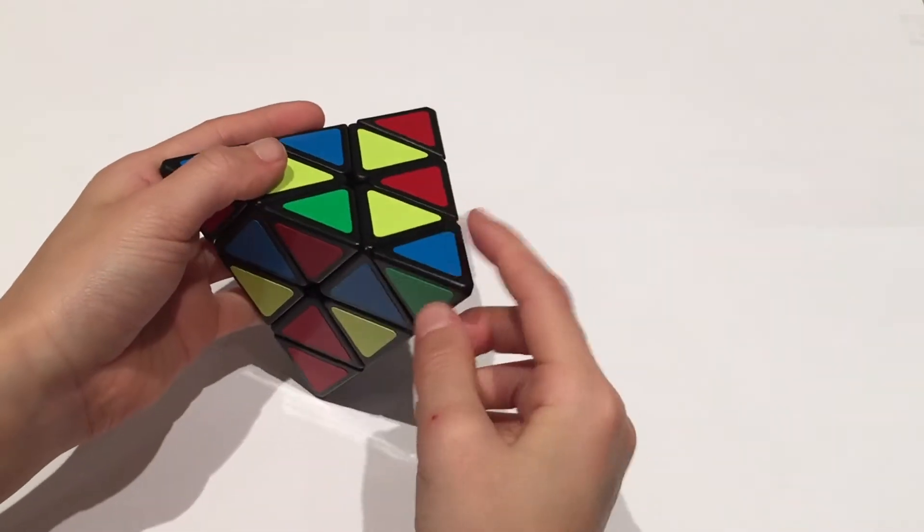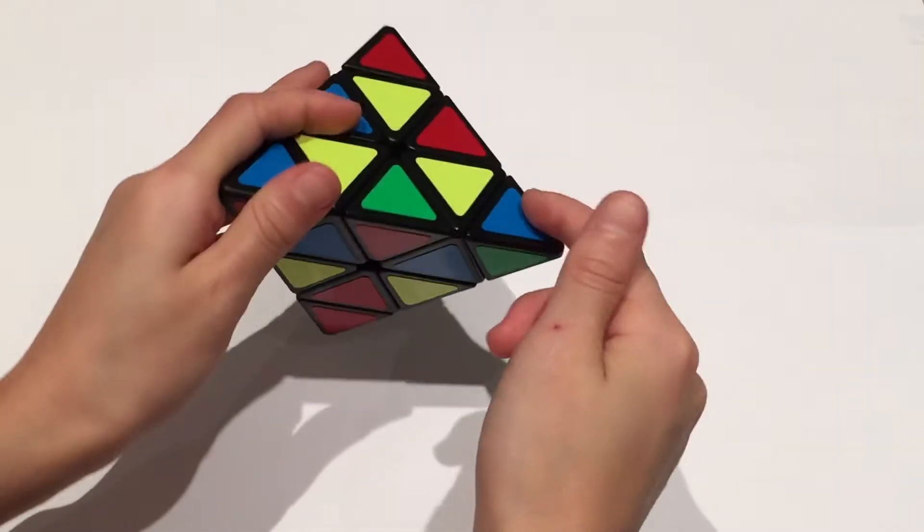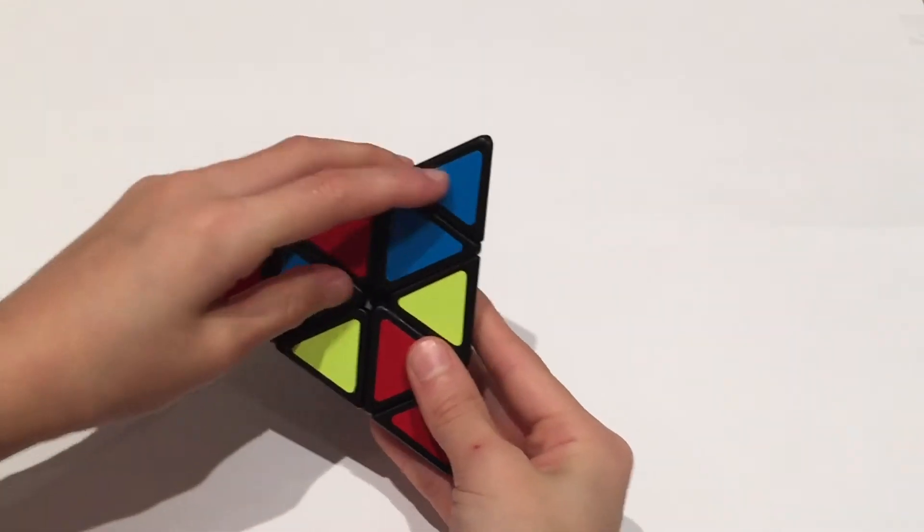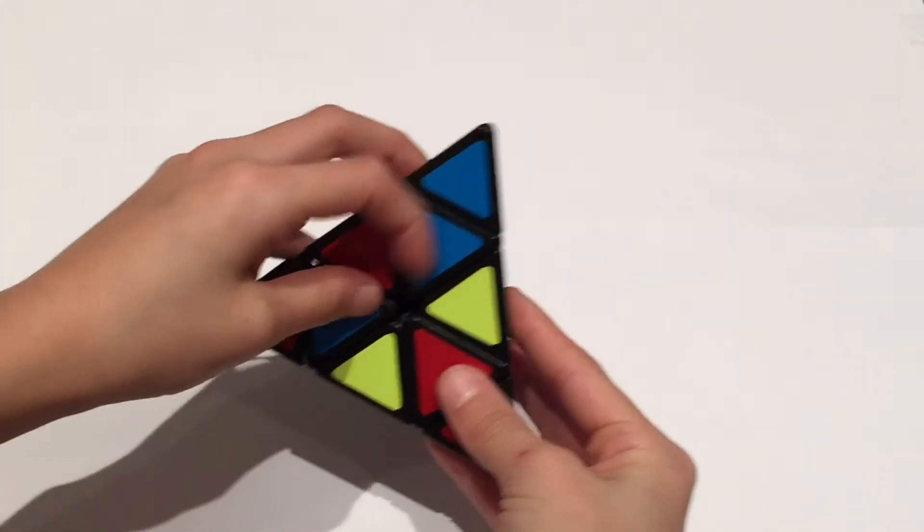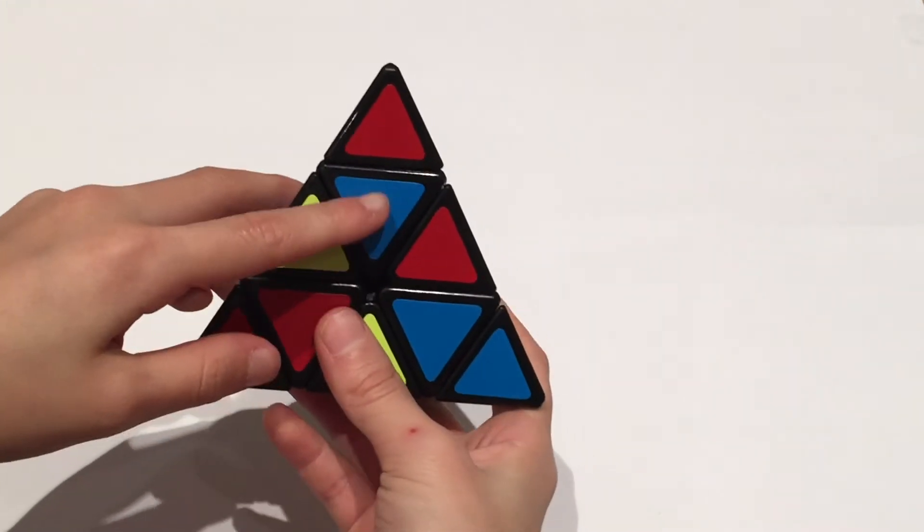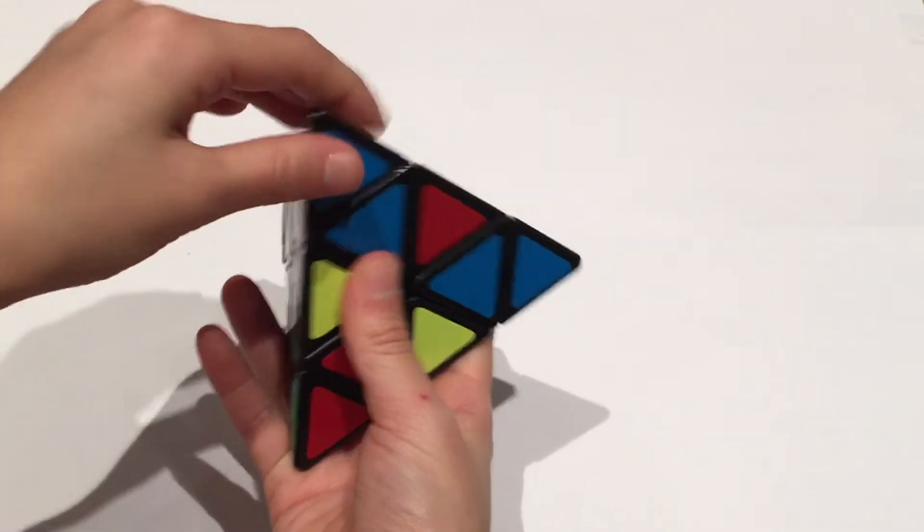So here's another center. And here's the blue tip. And there's the blue. So I'll just rotate it. And now there is a pair. Here is another center. And there we go.